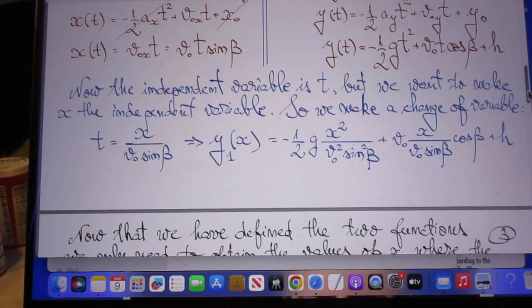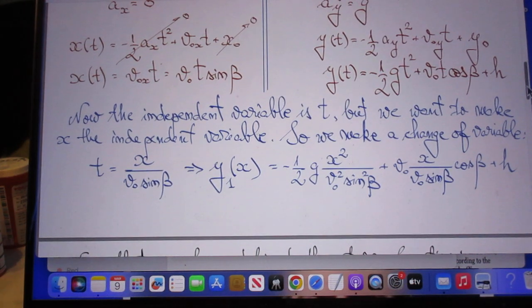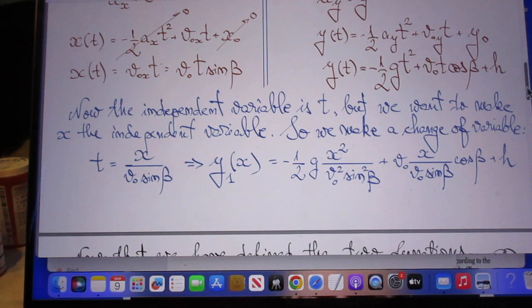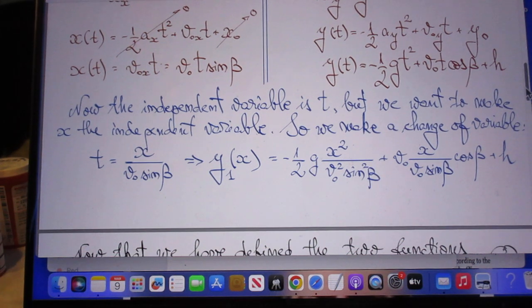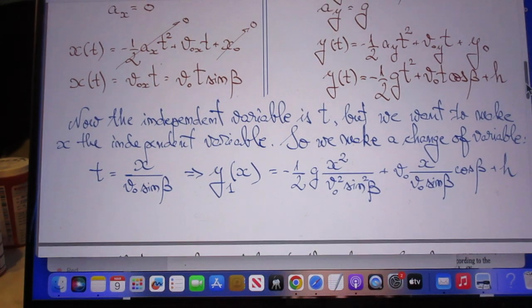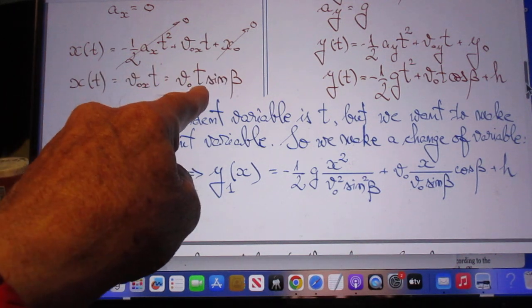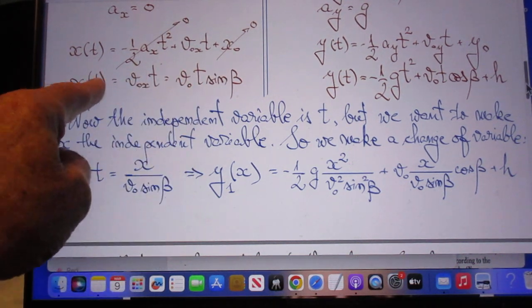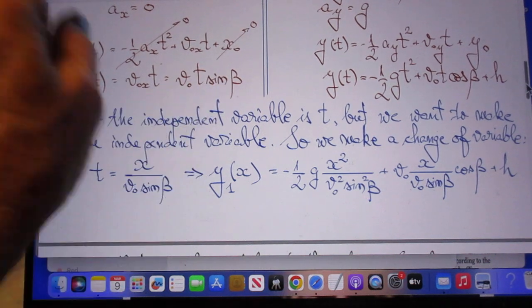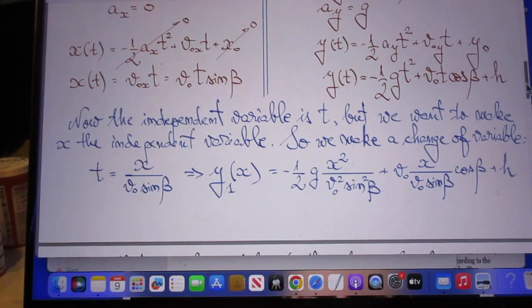Now the independent variable is t, so what he's going to do now is very clever, and several people have also done that. He is going to eliminate t, and he can do that because we know from this equation that t is x divided by v_0 sine beta.